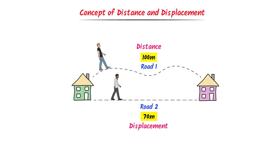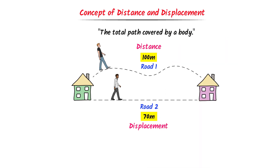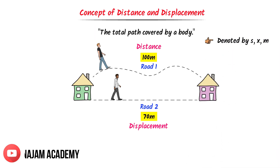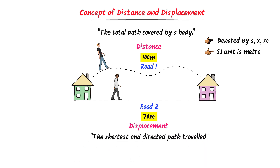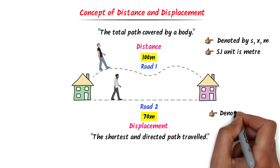We call road number two as displacement because it is the shortest and directed path from one house to another, so 70 meters is the displacement. Distance is defined as the total path covered by a body in a given time. It is denoted by different letters like S, X, M, etc., and its SI unit is meter. Displacement is defined as the shortest and directed path traveled by a body, denoted by S-arrow, X-arrow, or M-arrow. Its SI unit is also meter. In this lecture, I will use S for distance and S-arrow for displacement.